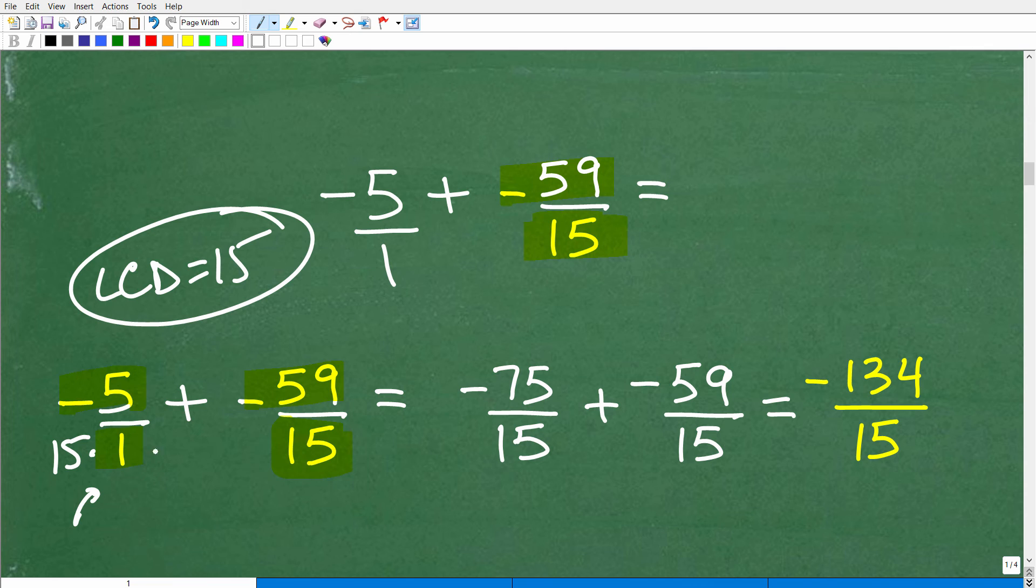But basically what I'm going to do is I'm going to multiply this 1 by 15 so I can get the denominators being the same, which is 15. But if I multiply the denominator by 15, I've got to multiply that numerator by 15. So 15 × (-5) is going to be -75, and 15 × 1 is 15. And that's going to be added to -59/15. Now finally, I can go ahead and get the answer. So the answer is going to be -75 + (-59) is -134/15. That is the final answer.